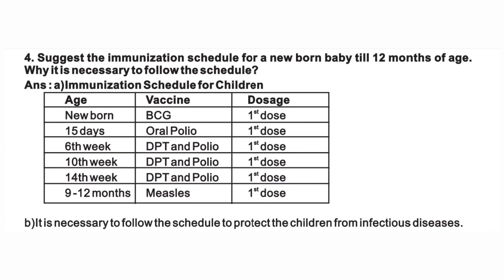Suggest the immunization schedule for a newborn baby till 12 months of age. Newborn: BCG vaccine — first dose. 15 days: Oral Polio — first dose. 6th week: DPT and Polio — first dose. 15th week: DPT and Polio — first dose. 14th week: DPT and Polio — first dose. 9 to 12 months: Measles — first dose. It is necessary to follow the schedule to protect children from infectious diseases.